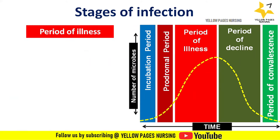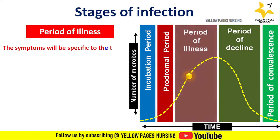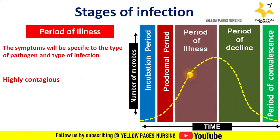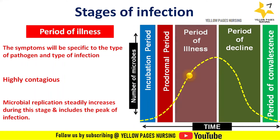Next comes the period of illness. The symptoms will be specific to the type of pathogen and type of infection. For example, if someone has influenza, they will experience the full symptoms of a flu including fever, body aches, cough, and fatigue. This stage is highly contagious. Microbial replication steadily increases during this stage and includes the peak of infection. The key difference from the prodromal stage is that prodromal symptoms are non-specific, whereas in the period of illness the symptoms are specific to the pathogen.